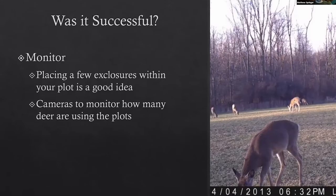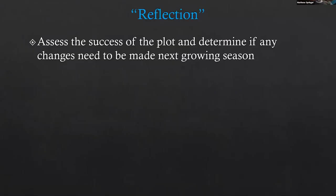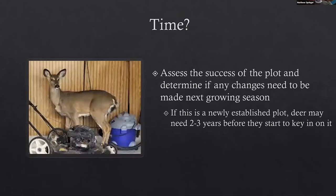At the end of the year, we try to reflect on what we've done and determine if this effort was a success, and whether we need to change things in the next growing season. First and foremost, if this is a new plot, you really need to not judge success for the first two or three years, because it does take animals time to figure out there's a food source there. A lot of our animals are older and know where food should be, so they're not necessarily always looking for new places. Don't make any drastic changes to new areas for at least two to three years to give animals enough time to know food will be consistently available.